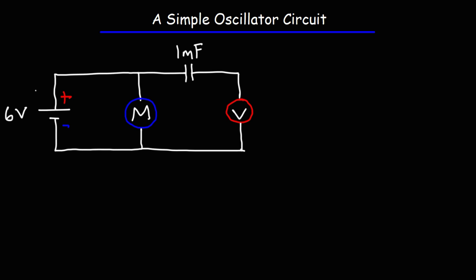So let's talk about how it works. The battery is going to deliver current to the circuit, and as the current flows through the motor, the motor will begin to spin. And as it does so, it's going to generate a back EMF, a time-varying signal.